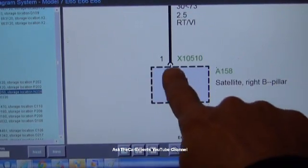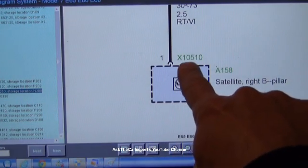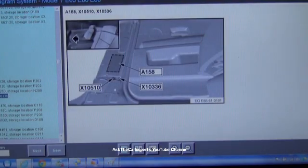Let's take a look right here at this connector at the B pillar satellite at pin 1, X10 510. They're just showing you the location of the B pillar satellite.